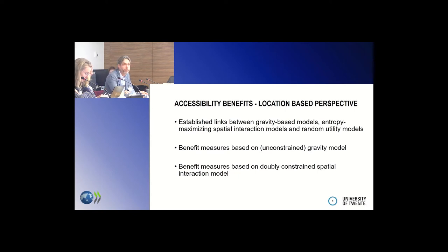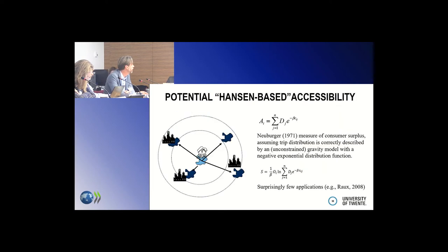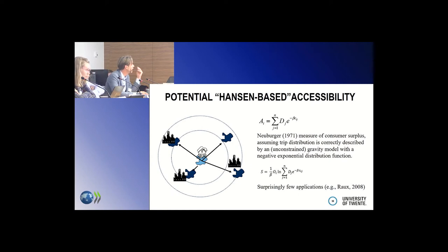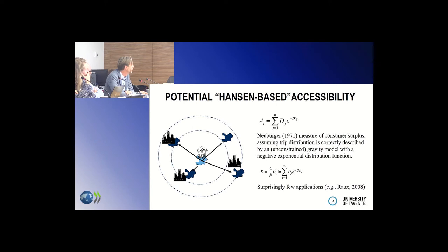There are well-established links between different modelling frameworks — from gravity-based to spatial interaction models to random utility models. Several benefit measures have been developed, some quite a long time ago, based on the gravity model or the doubly-constrained spatial interaction model, which is still heavily used as a transport demand model. Hansen's accessibility measure — looking at accessibility from a gravity point of view, with a negative exponential function — has been around for more than 60 years and is heavily used. Already in 1971, which is actually my birth year, a measure of consumer surplus was developed from this framework.